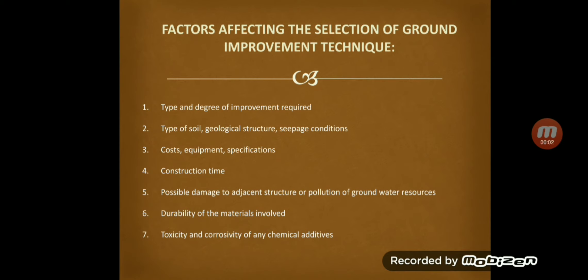There are also various factors which affect the selection of ground improvement techniques. Factor number one is the type and degree of improvement required, which includes bearing capacity improvement, settlement reduction, permeability enhancement, etc.